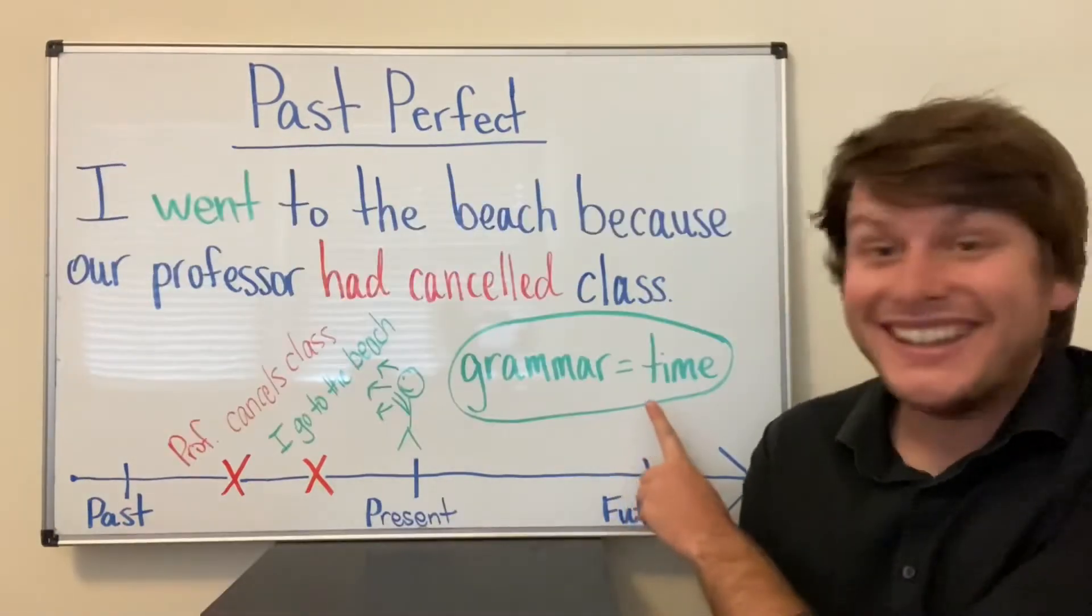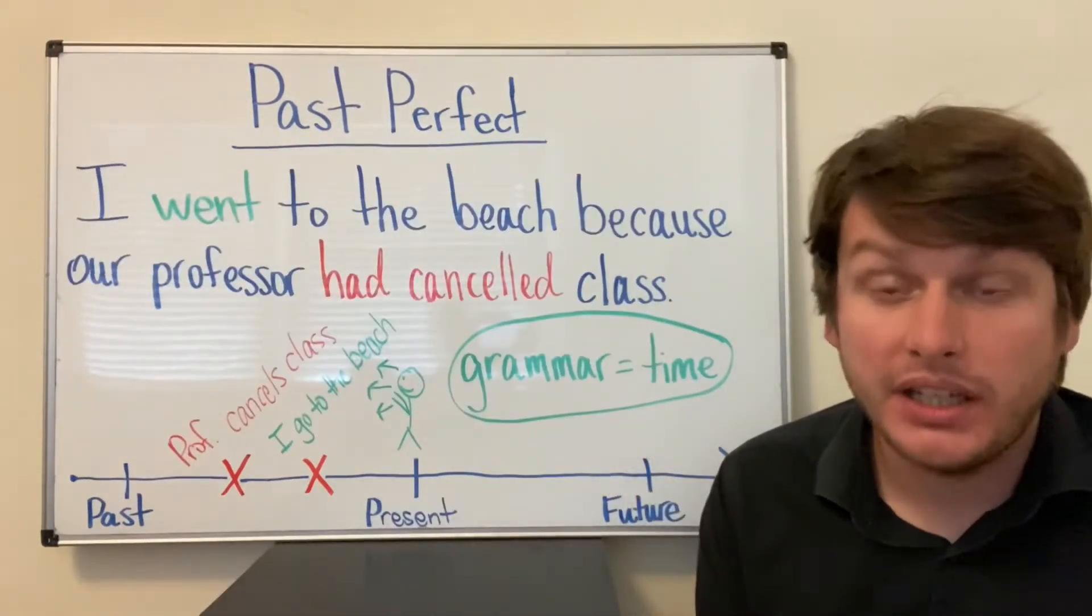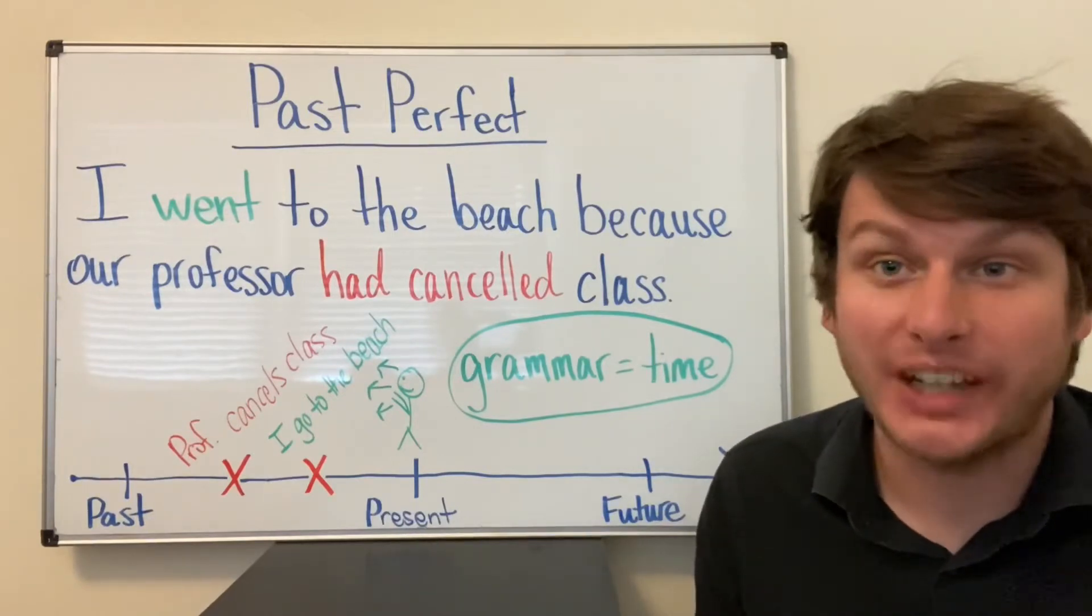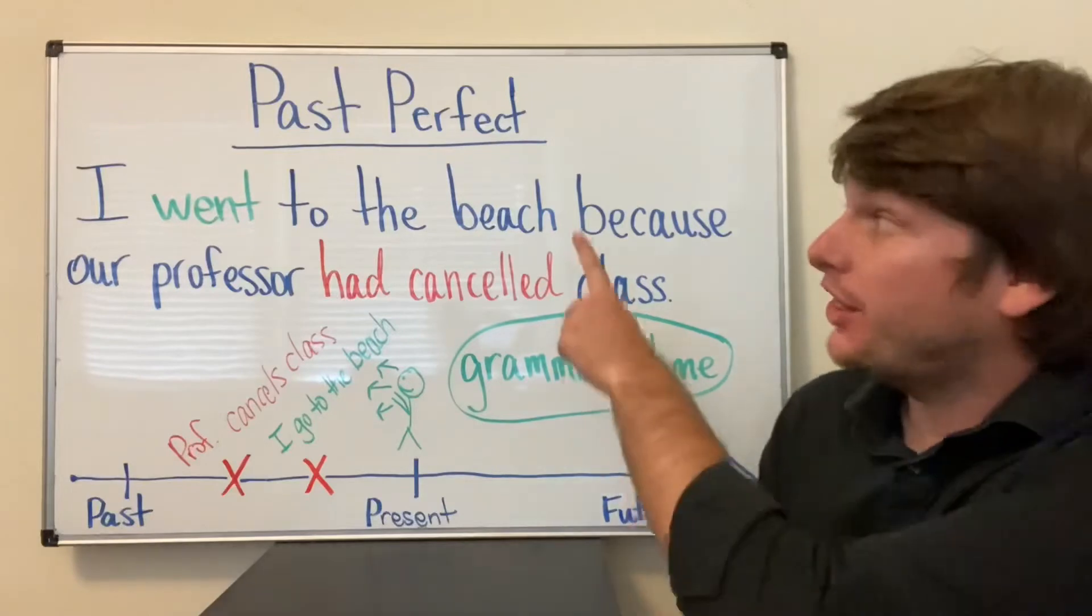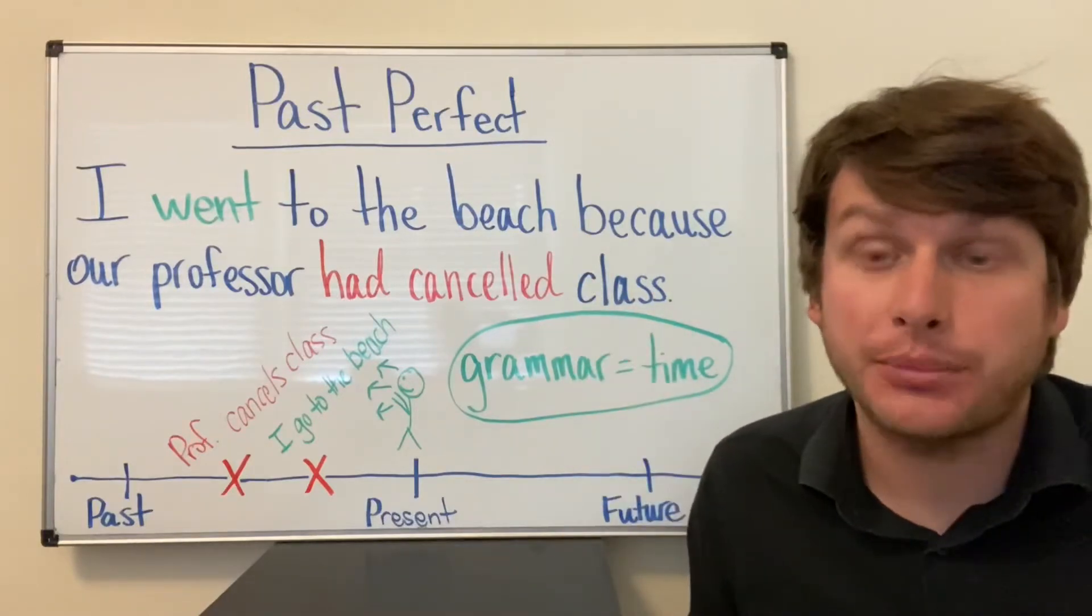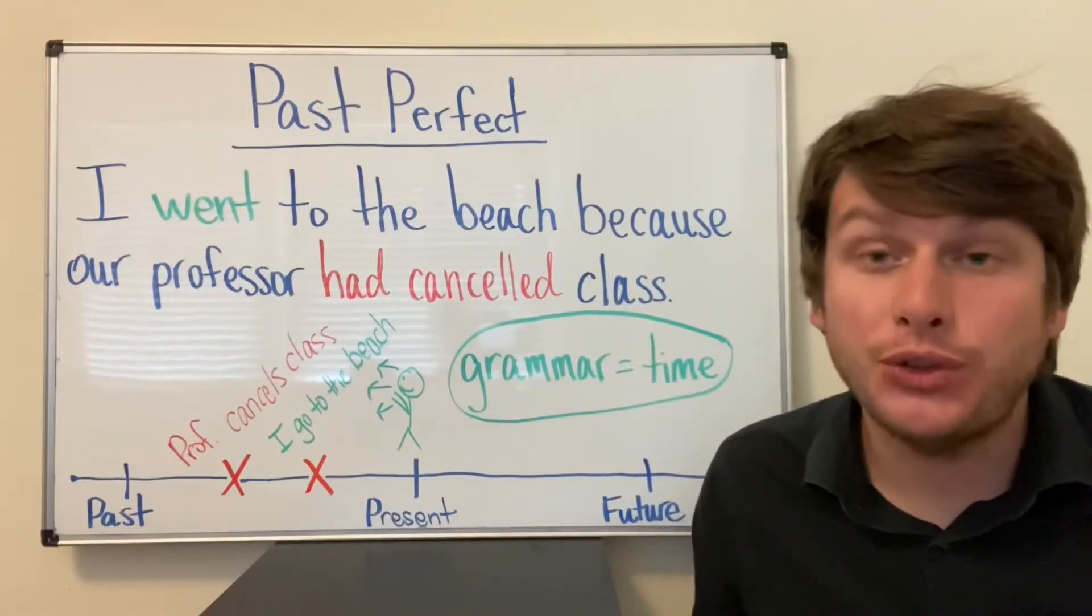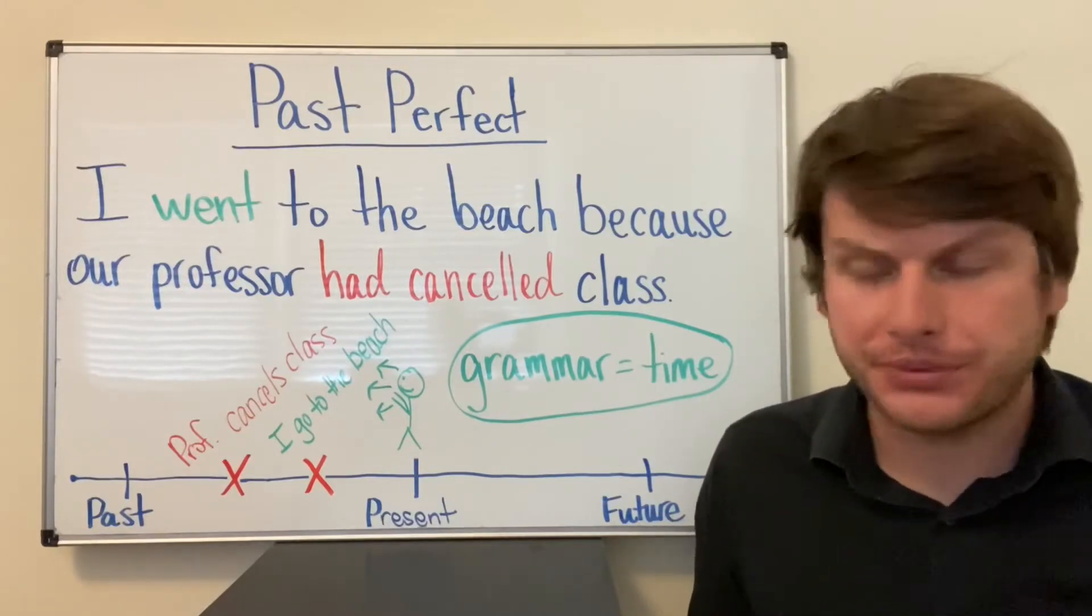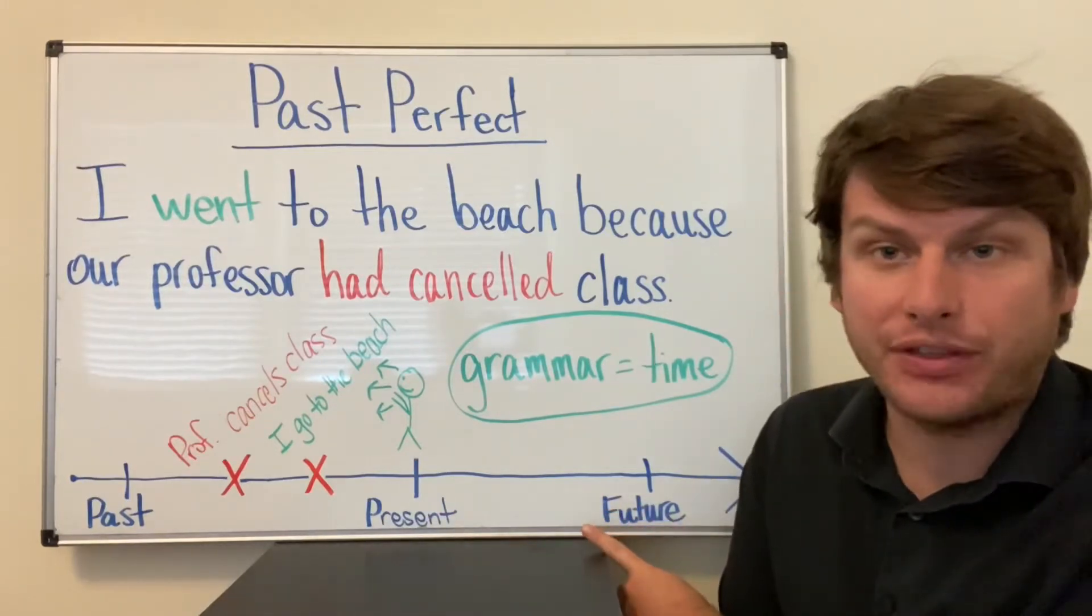Grammar is time in English. Grammar tells you when something happened. In this case, with the Past Perfect, it tells you which event happened first. So let's look at the timeline.